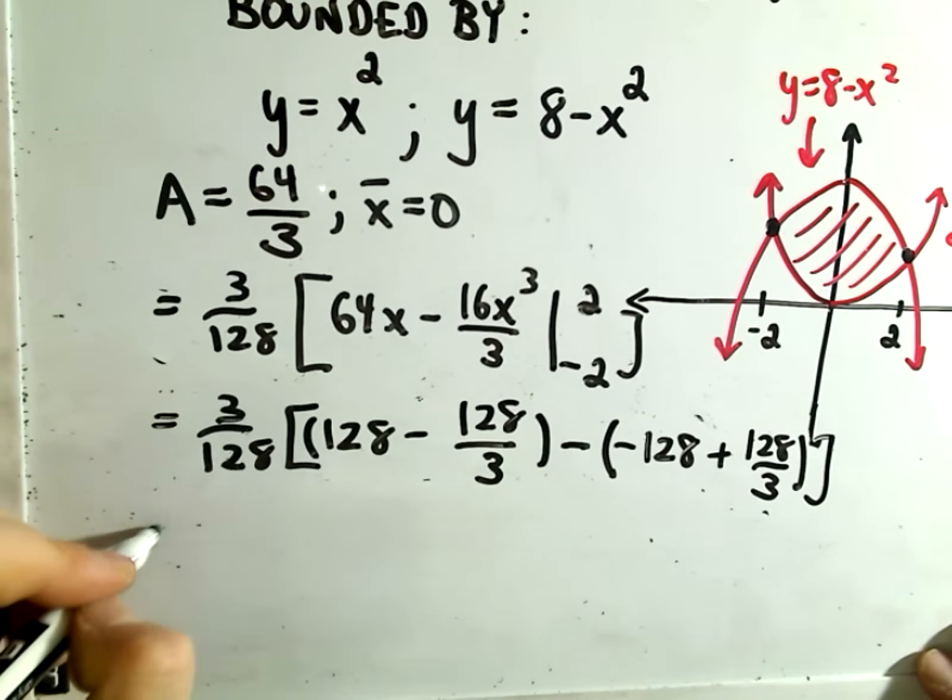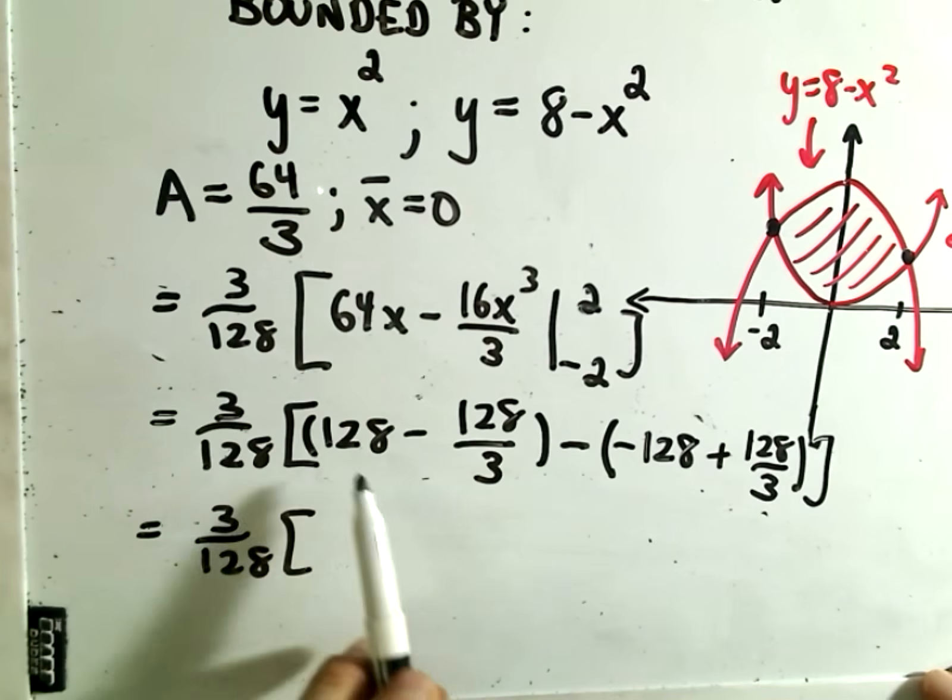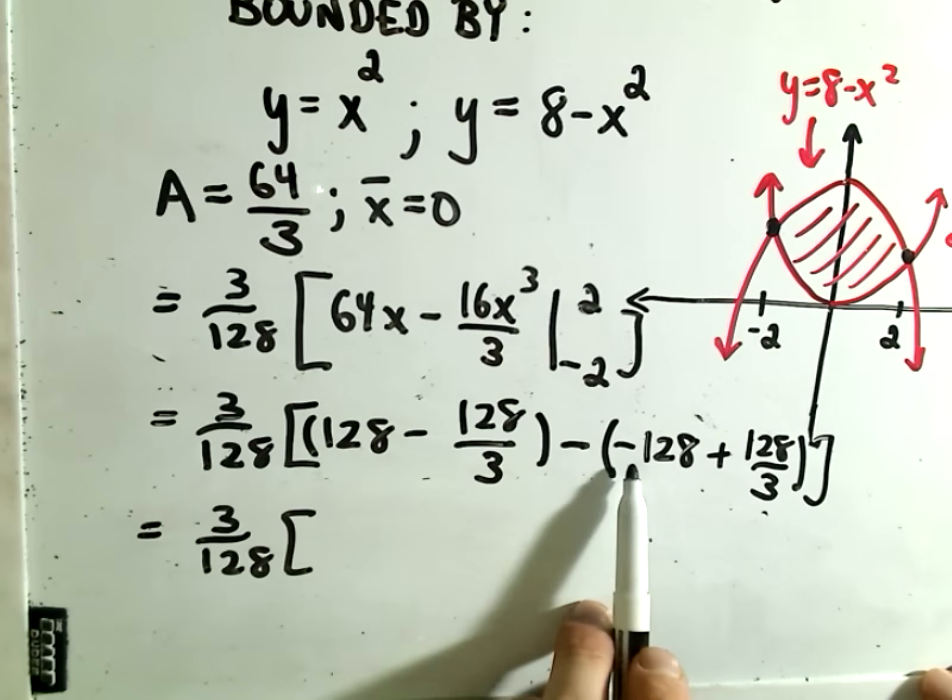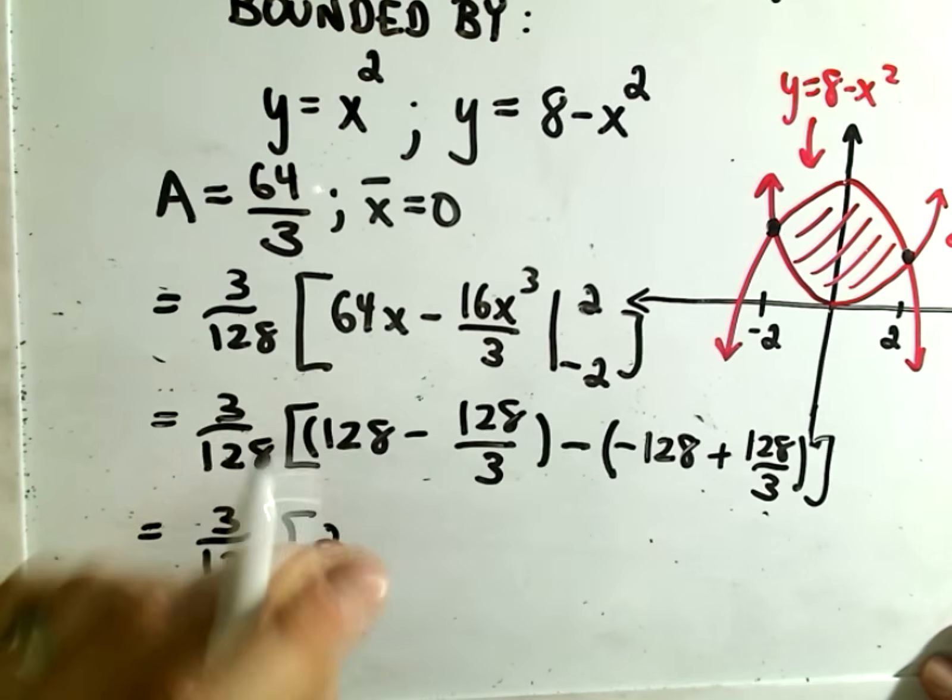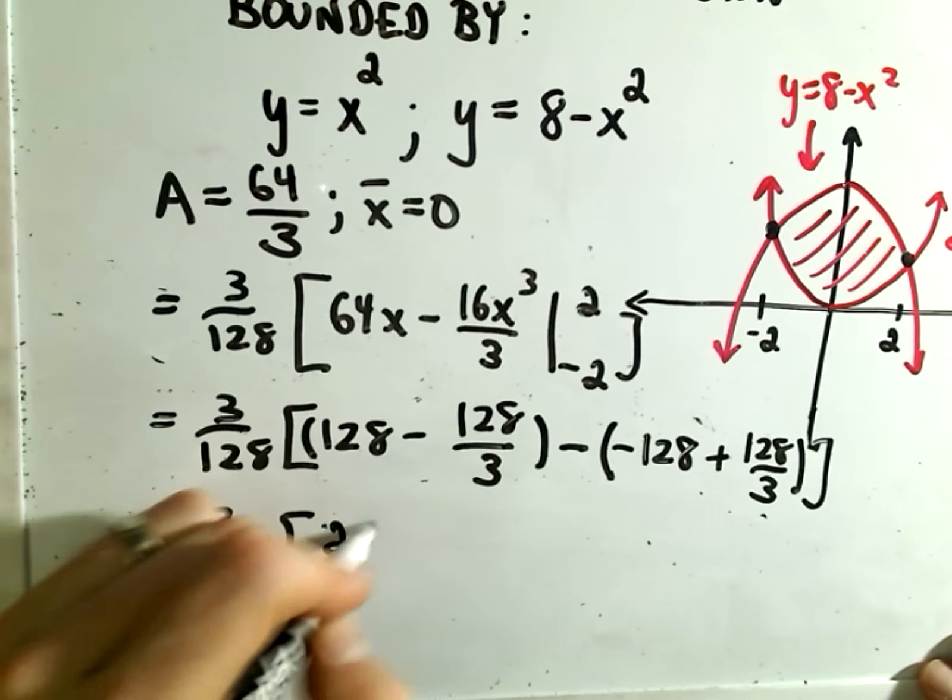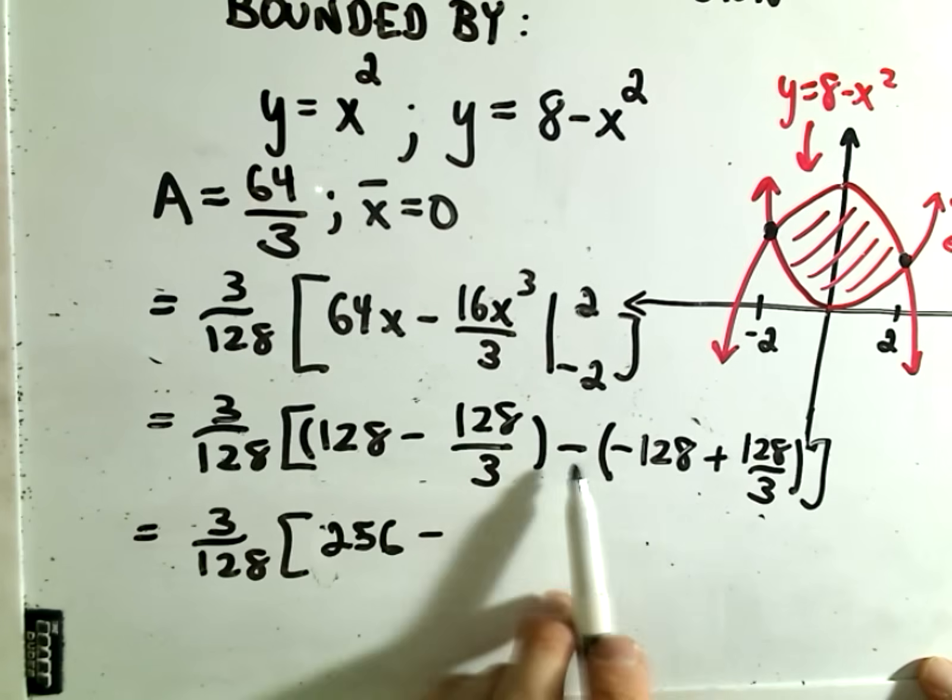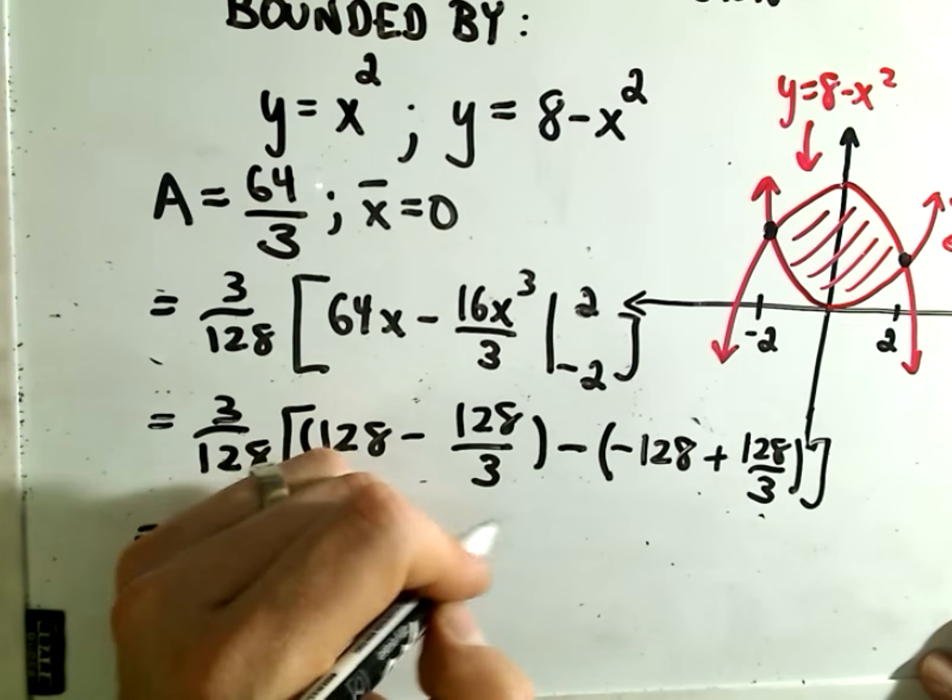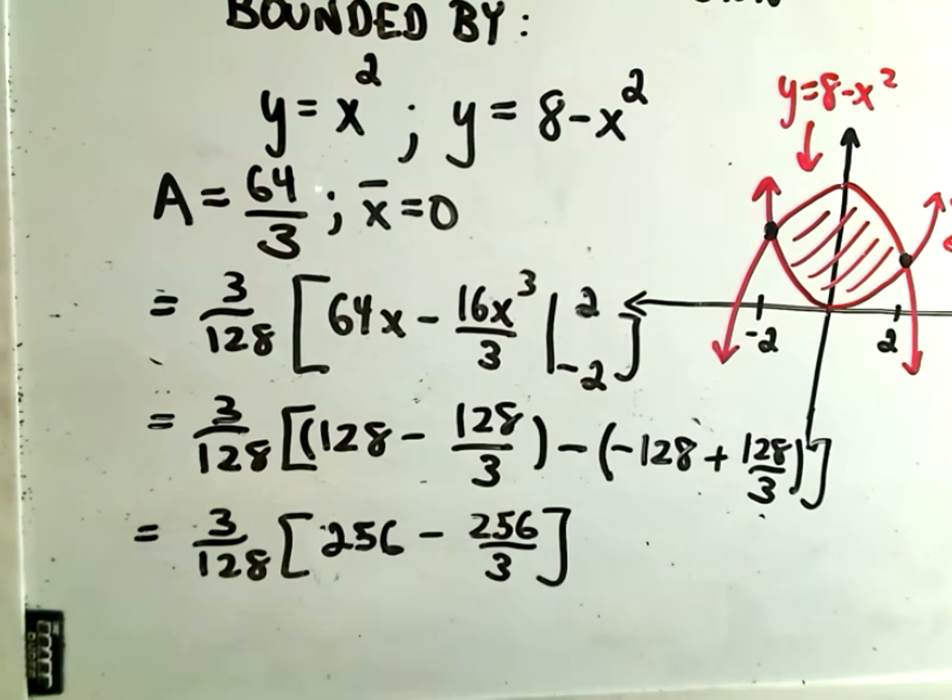Now we simply have to combine these together. We'll get 3/128. It looks like we'll get 128 plus 128, giving us 256, and then minus 128 and minus 128 again, giving us -256/3.